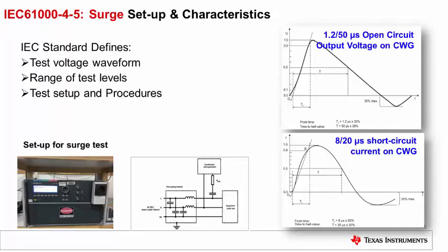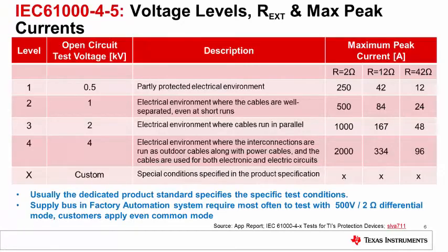The IEC defines the surge test voltage waveform, the range of test levels, and the test setup and procedures. The surge open-circuit voltage waveform has a 1.2 microsecond rise time and 50 microsecond half-wave time, while the current profile is defined by an 8 microsecond rise time and 20 microsecond half-wave time. The surge test has several test levels from Level 1 to Level 4, along with various coupling impedances.